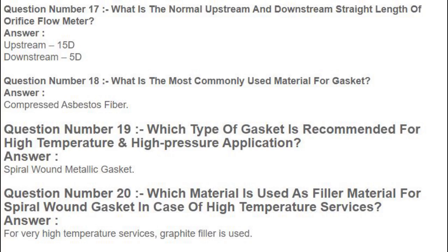Question number 17: What is the normal upstream and downstream straight length of an orifice flow meter? Answer: Upstream — 15D. Downstream — 5D.